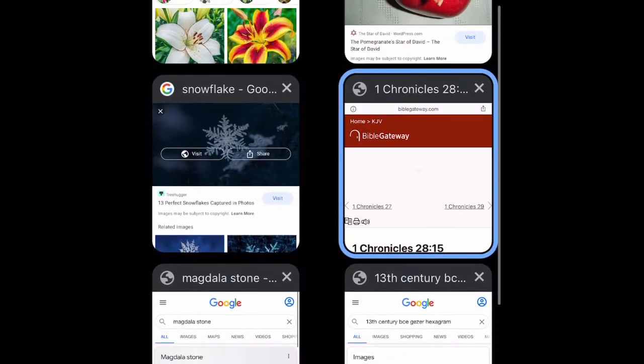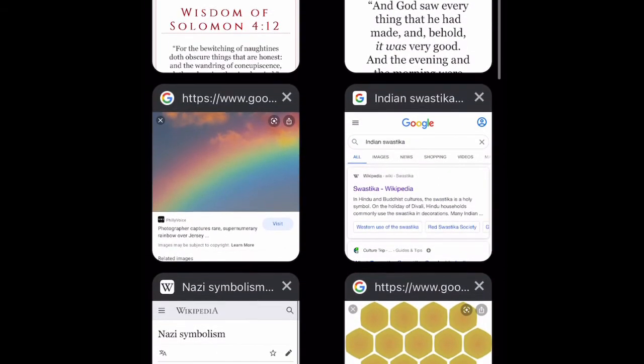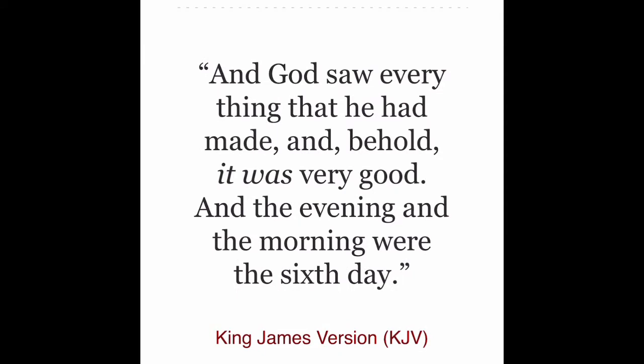Genesis 1:31 says: 'And God saw everything that he had made, and behold, it was very good. And the evening and the morning were the sixth day.' So the Most High — everything he created during that day was good. Snowflakes he created. The lily he created. The pomegranate. The honeycomb. So when people look at the so-called Star of David and say that's a wicked, evil symbol or the Star of Moloch, now you're saying honeycombs are wicked — that honey, or snowflakes that the Most High created, or lilies or pomegranates are evil, because they resemble that same exact symbol. Which doesn't make sense.